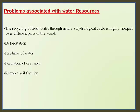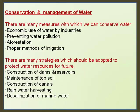The recycling of fresh water through nature's hydrological cycle is highly unequal over different parts of the world, causing scarcity of fresh water in many regions. Problems include deforestation, hardness of water, formation of dry lands, and reduced soil fertility. Conservation measures include economic use of water by industries, preventing water pollution, afforestation, proper methods of irrigation, construction of dams and reservoirs, maintenance of topsoil, construction of canals, and rainwater harvesting.